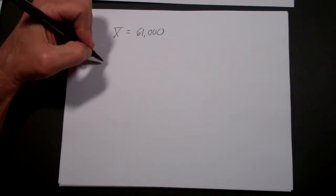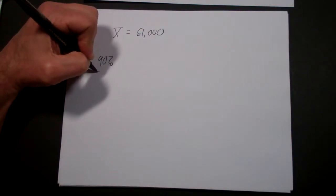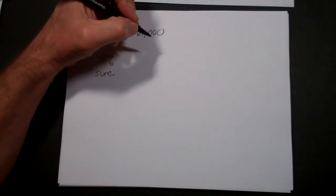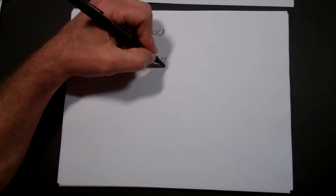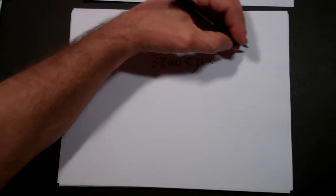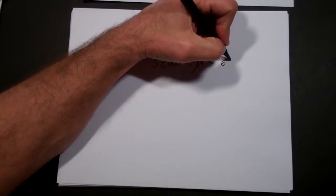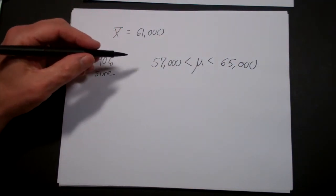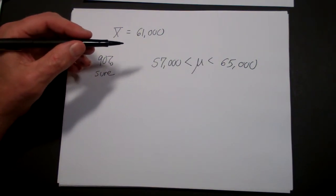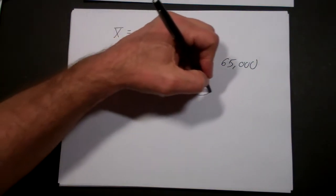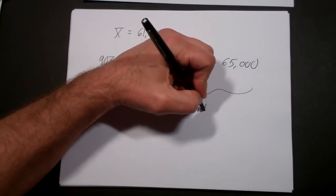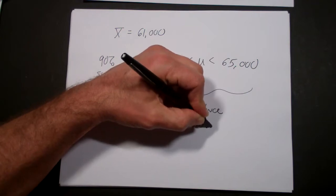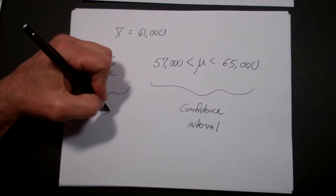Let's go back to a real example. Let's say you were estimating the average income of accountants and you got X-bar equal to $61,000. But let's say you were about 90% sure that the true value of how much accountants actually make was between $57,000 and $65,000. If you notice here, there are two things about this confidence interval: you have an interval, which is the range of numbers, and then you also have a degree of how sure you are, and that's called the confidence level.